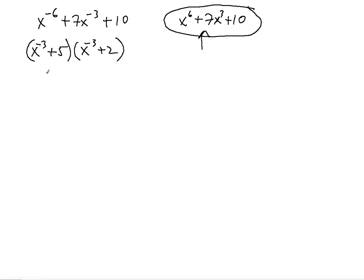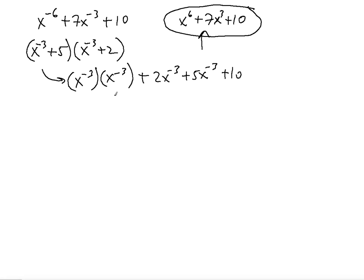To check, you multiply (x^(-3) + 5)(x^(-3) + 2) using the FOIL method. You get x^(-3) times x^(-3), which adds the powers to give x^(-6), then the outer and inner terms are 2x^(-3) and 5x^(-3), which combine as like terms to give 7x^(-3), plus 10. That gives you x^(-6) + 7x^(-3) + 10. Correct!